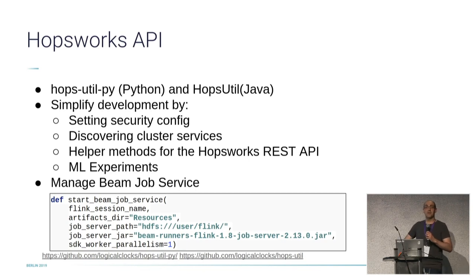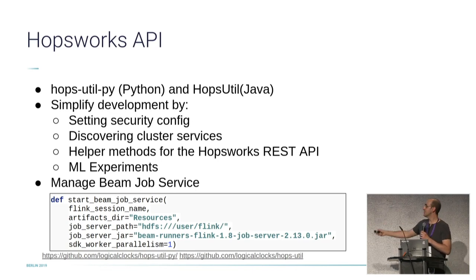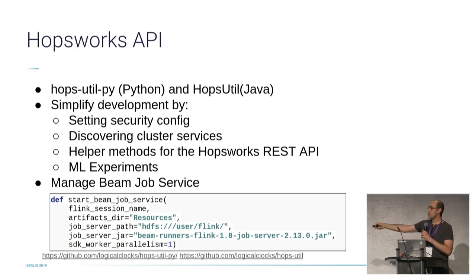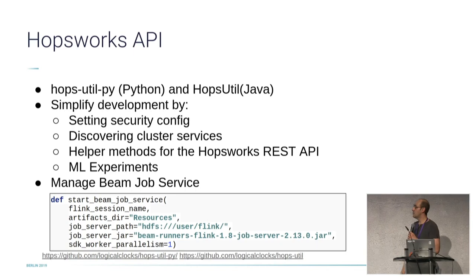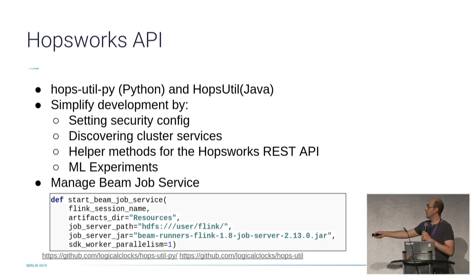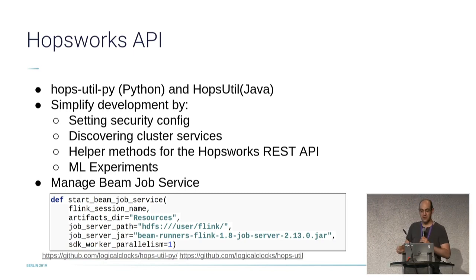For Beam, we've added an extra service to manage the Beam job service. The job service is the one you submit your pipelines to, to be executed. From code in your project, you can start this job service and link it to the Flink cluster you want, give it information about where the artifacts are going to be stored in HDFS, and also provide the jars that will be used to run the job server. All these tools help you when developing your Beam pipelines.